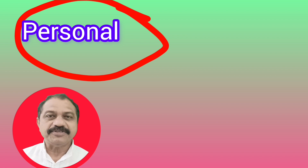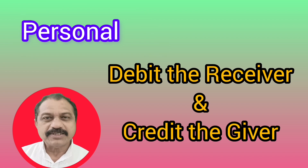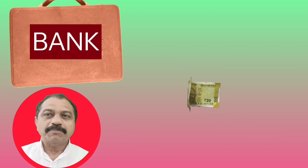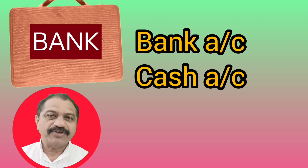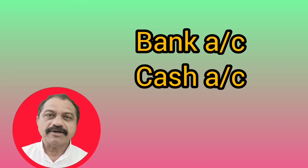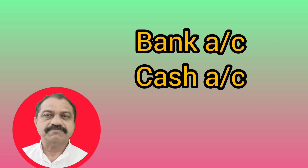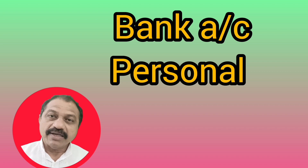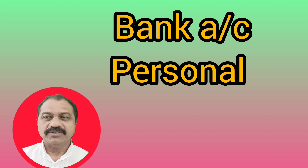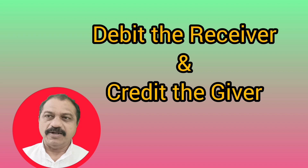The second type of account is personal account. These are accounts of persons, both natural and artificial. The rule here is: debit the receiver and credit the giver. Suppose money is deposited by the business in the bank. The two affected accounts are bank account and cash account. Bank account is a personal account, so the rule of personal accounts applies: debit the receiver and credit the giver.